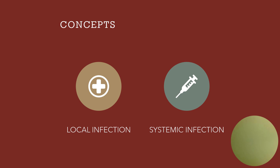It can include oliguria — oliguria is going to be a low urine output. Tachypnea, which is going to be rapid respirations. Tachycardia, which will be rapid heart rate, nausea, vomiting, and diarrhea.